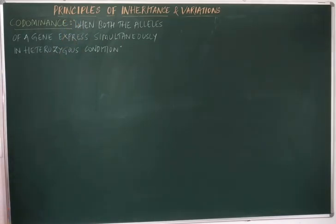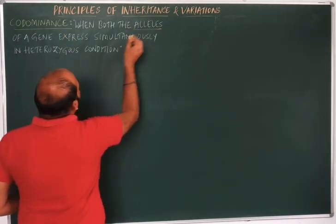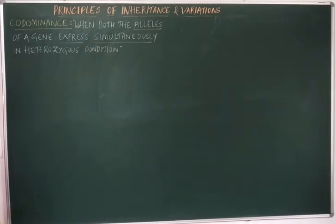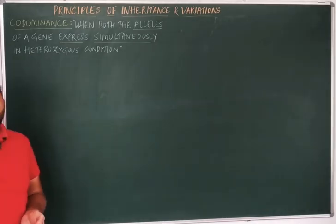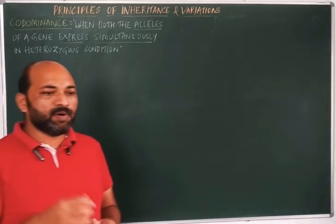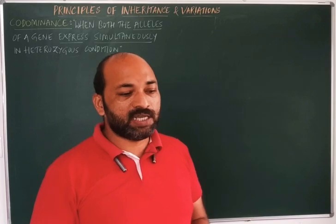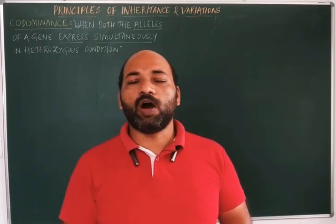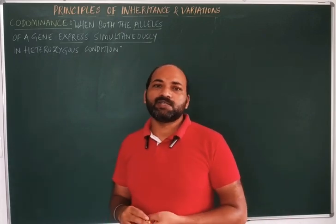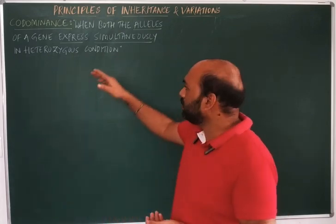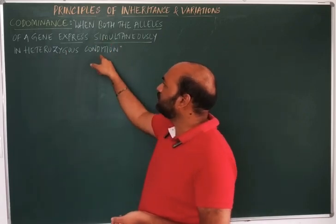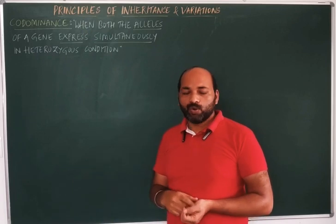So this is the definition for co-dominance, which means the two alleles of a gene are expressing simultaneously in heterozygous condition. Remember, co-dominance never exhibits the dominant and recessive relationship or the incomplete dominance relationship. Here the two dominant alleles are expressing together in the heterozygous condition — that is called co-dominance.